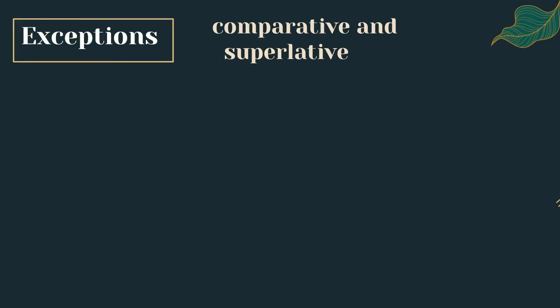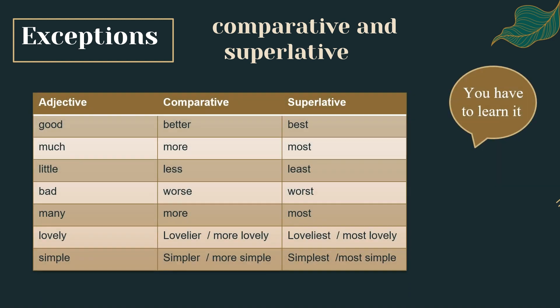Exceptions — comparative and superlative forms you will have to learn: good → better → best, much → more → most, little → less → least, bad → worse → worst, many → more → most. Note: lovely → lovelier or more lovely → loveliest or most lovely; simple → simpler or more simple → simplest or most simple.